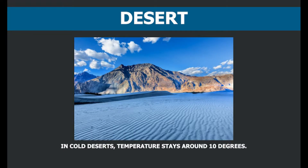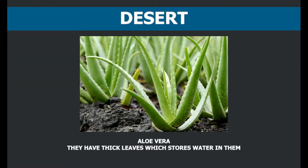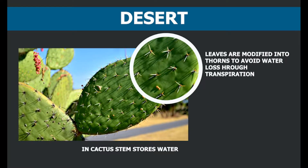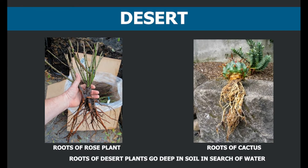In cold deserts, temperature stays around 10 degrees. Since water availability is limited in desert habitat, plants here adapt to it in various ways. Plants in desert habitat have thick leaves that store more water and minerals. Plants like cactus store water in their stem and their leaves are reduced to spines. This minimizes water loss due to transpiration. Roots of desert plants go very deep in the soil in search of water.